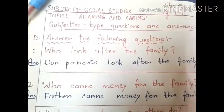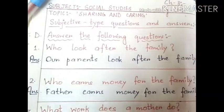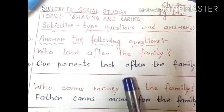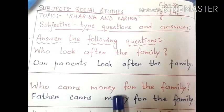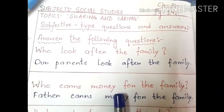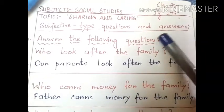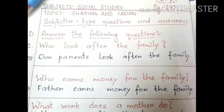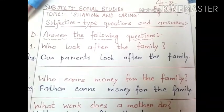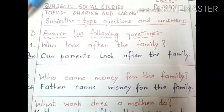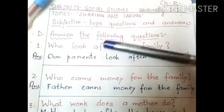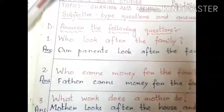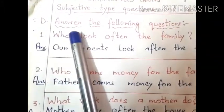Hello students, welcome to your social studies class. Today we are on chapter number three, 'Sharing and Caring,' from your social studies book — Irish First Book, A Contemporary Approach to Social Science, Book One, page number 14. We have already done objective type questions and answers like true/false and fill in the blanks. Today we'll start with the subjective type question and answers from exercise D.